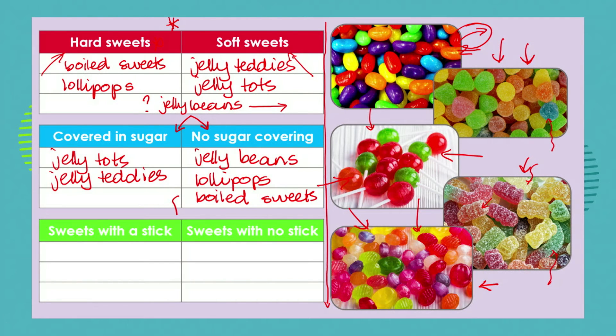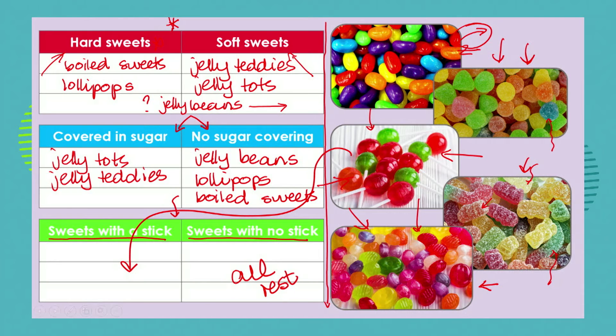Let's try sorting them according to yet another characteristic — sweets with a stick or sweets with no stick. It's very easy to see that our lollipops are the sweets that have sticks, and all the rest belong in the sweets with no stick category. So we can take the same group of objects — in this case sweets — and classify them in different ways according to what characteristic we're choosing.